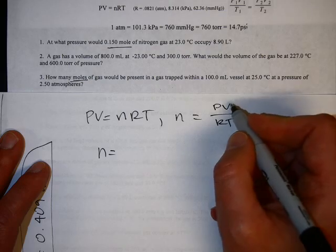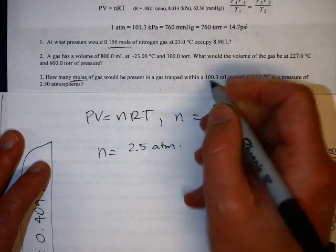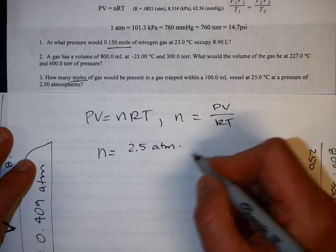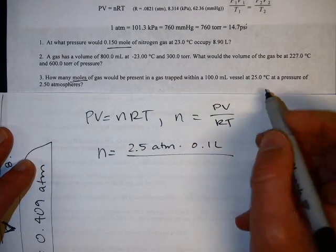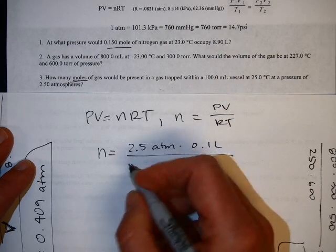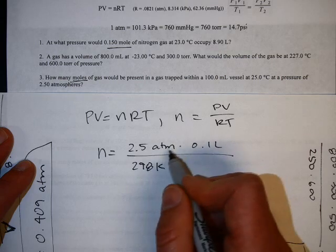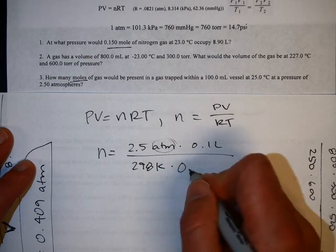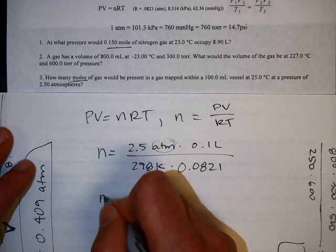The pressure is 2.5 atmospheres. The volume is 100 milliliters. That's got to be in liters, so you divide by 1000, so it would be 0.1 liters. The temperature is 25 degrees Celsius, that's 298 Kelvin. And since my pressure is in atmospheres, my R is 0.0821.